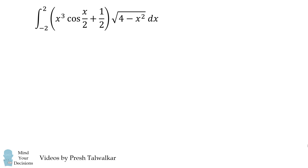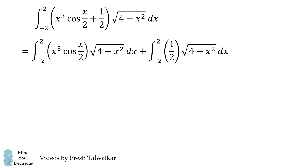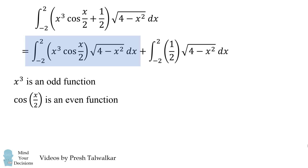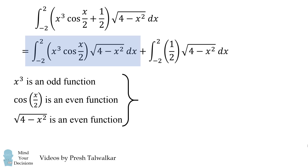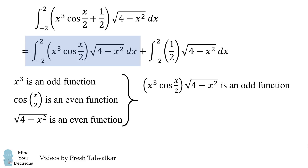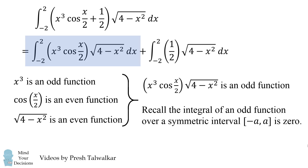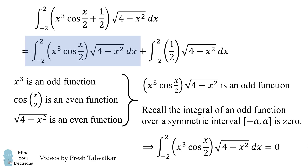How can we solve this integral? We'll first distribute what's in the parentheses, so we have two separate integrals. Now let's consider the integral on the left — we can evaluate it by considering even and odd functions. x cubed is an odd function, cosine of x over 2 is an even function, and the square root of 4 minus x squared is an even function. The product of these functions is therefore an odd function. Recall that the integral of an odd function over a symmetric interval like negative a to a is identically zero, so this entire integral vanishes and equals zero.